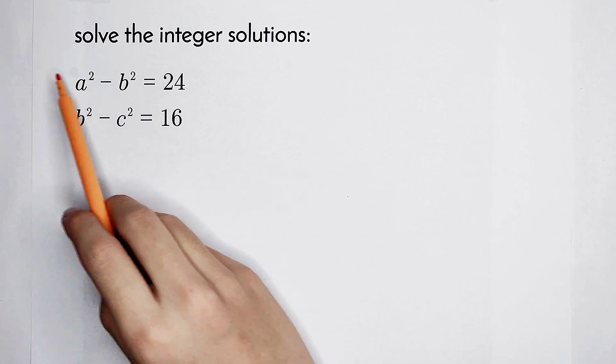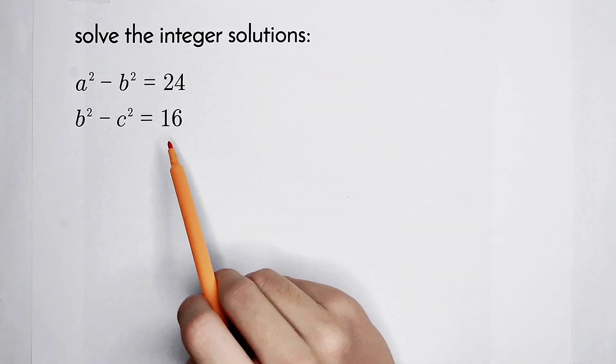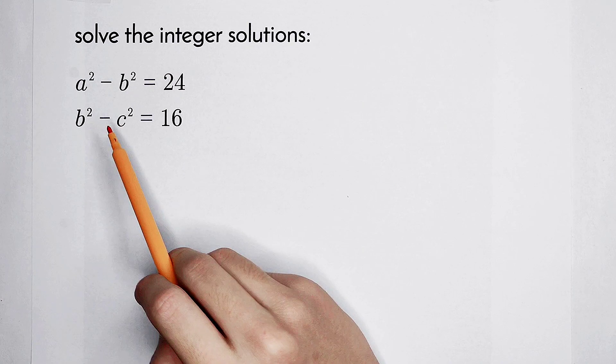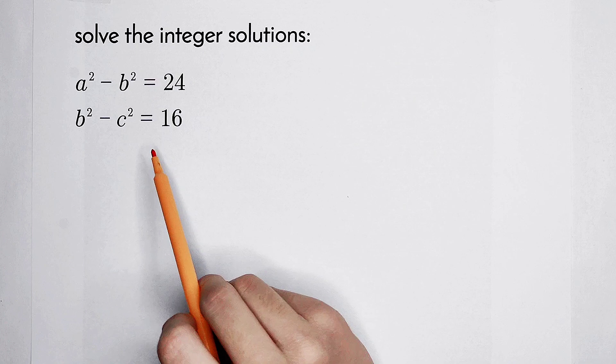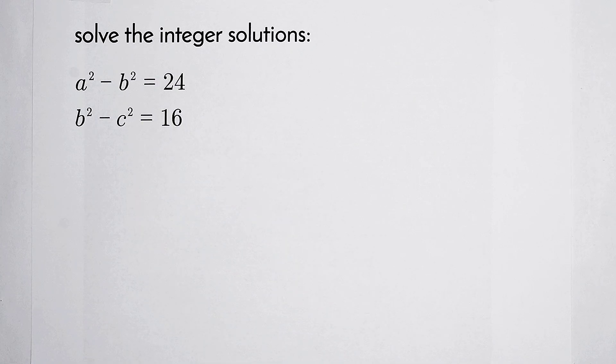Welcome back to Math Window. Solve the integer solutions of these two equations: a squared minus b squared equals 24, and b squared minus c squared equals 16. How should we solve it?